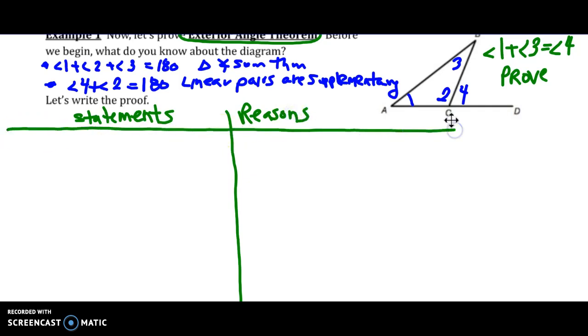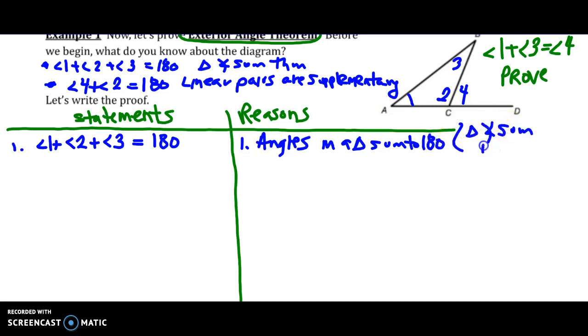We don't have any given information, so we can dive right in with what we see. Number 1: angle 1 plus angle 2 plus angle 3 equals 180 degrees. Why do we know this? Angles in a triangle sum to 180. Or you can write Triangle Angle Sum to 180, or Triangle Angle Sum Theorem. You can name the theorem or write what the theorem says - those are your two choices.